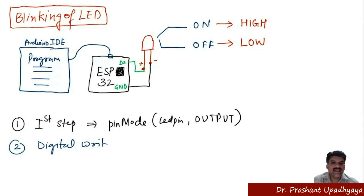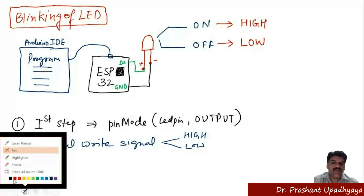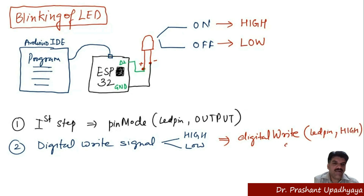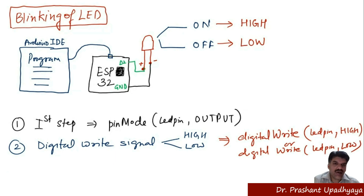The second step is to use the digitalWrite function to write a signal to the LED, making it either HIGH or LOW. We define the LED pin where it is connected, then define whether we want HIGH or LOW. If we want the LED on, we write digitalWrite(ledPin, HIGH); if we want it off, we write digitalWrite(ledPin, LOW).